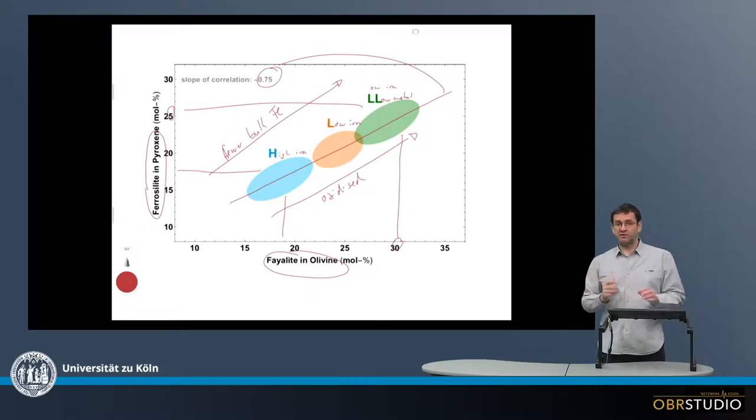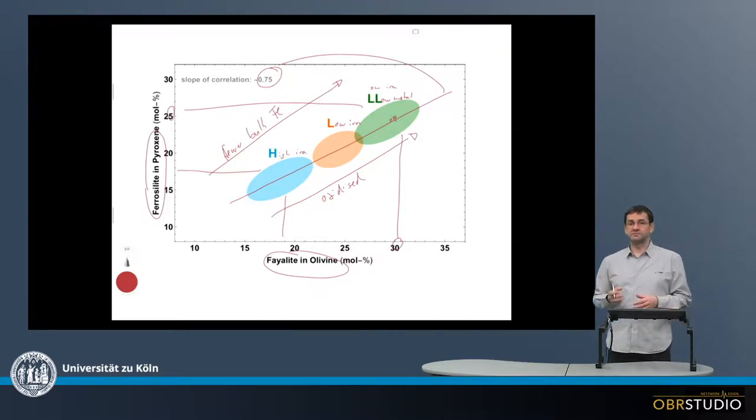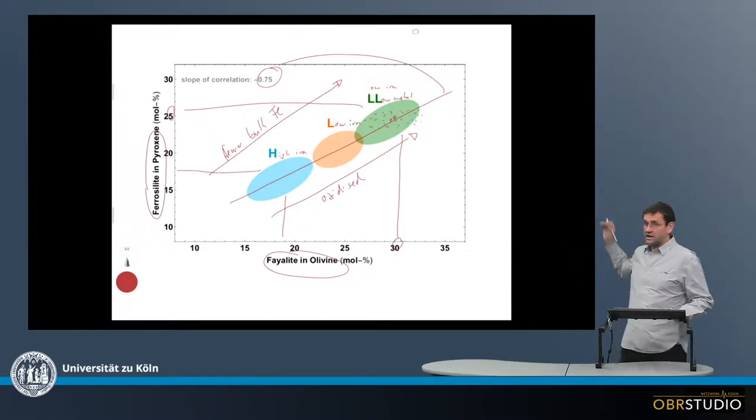Now, when we look at various petrologic types, for example, if there's a high petrologic LL chondrite, the individual olivine and pyroxene will have very narrow scatter. However, when we look at an LL chondrite of a low petrologic type, say for example type 3, the individual olivine and pyroxene analyses will scatter across a larger range.